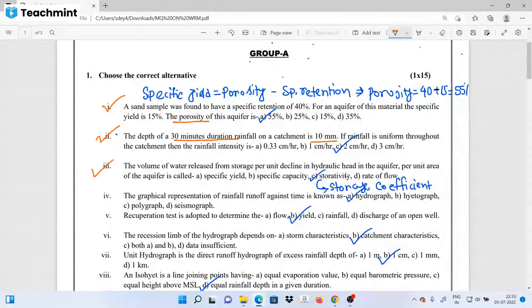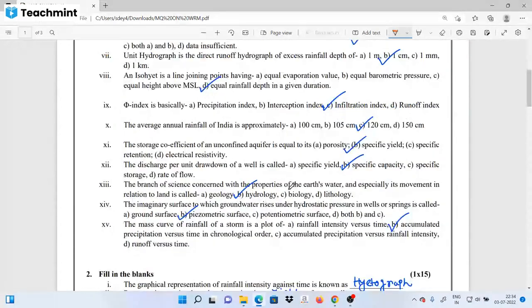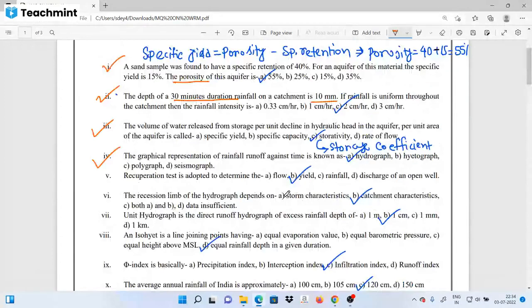Next question: the volume of water released from storage per unit decline in hydraulic head in the aquifer per unit area of the aquifer is called storage coefficient or specific yield. The graphical representation of rainfall runoff against time is known as a hydrograph. Runoff against time is a hydrograph. As you can see, rainfall intensity is also shown as a graph.